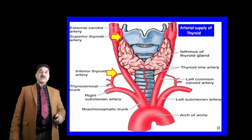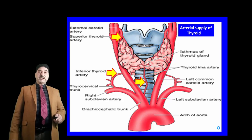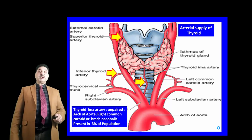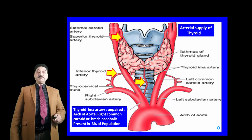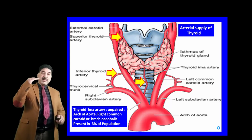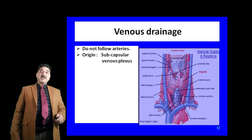The thyroid gland receives its blood supply from the superior thyroid artery, which is a branch of the external carotid artery, and the inferior thyroid artery, which is a branch of the thyrocervical trunk. A third, uncommon source present in about three percent of the population is the thyroid ima artery — 'ima' meaning unpaired. This vessel may arise from the arch of the aorta, right common carotid artery, or brachiocephalic trunk.